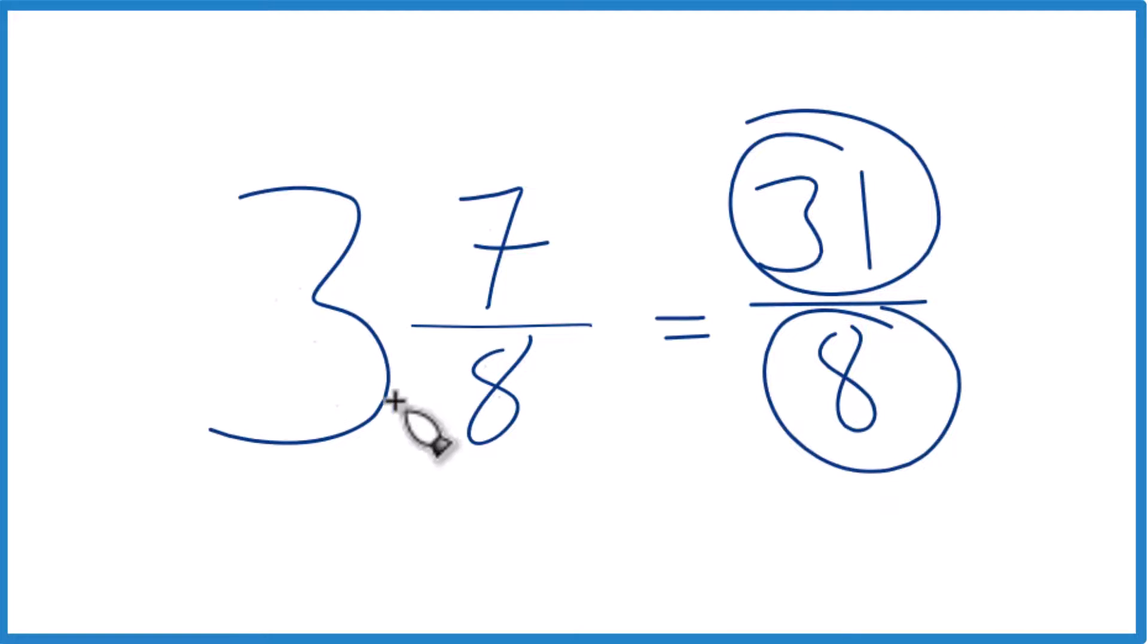We have our improper fraction for 3 and 7 eighths. And these two numbers, they're equivalent. They have the same value. They're just different representations.